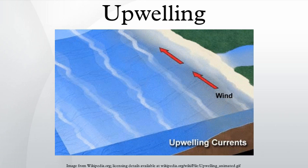In the Northern Hemisphere, the water is transported to the right of the direction of the wind. In the Southern Hemisphere, the water is transported to the left of the wind. If this net movement of water is divergent, then upwelling of deep water occurs to replace the water that was lost. The major upwellings in the ocean are associated with the divergence of currents that bring deeper, colder, nutrient-rich waters to the surface.